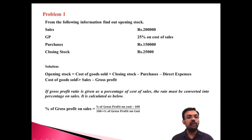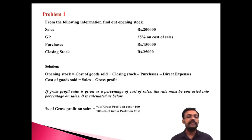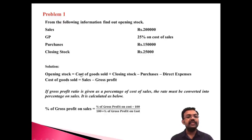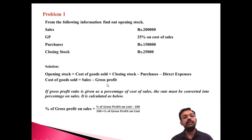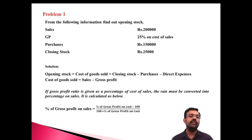The formula for opening stock is: Opening Stock = Cost of Goods Sold + Closing Stock − Purchases − Direct Expenses. And Cost of Goods Sold = Sales − Gross Profit. That is the formula we will apply to this problem.